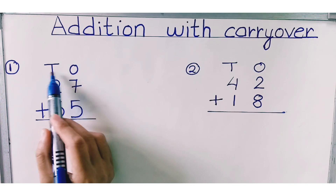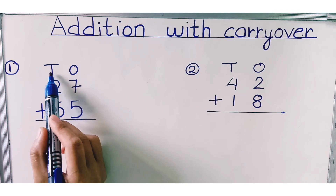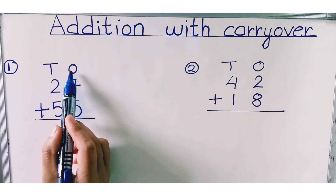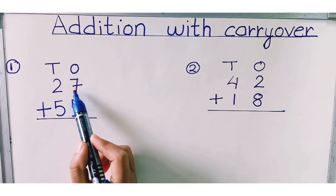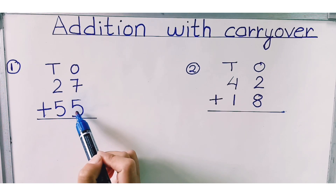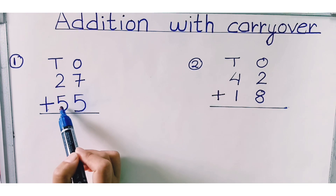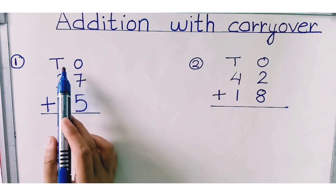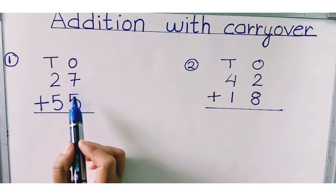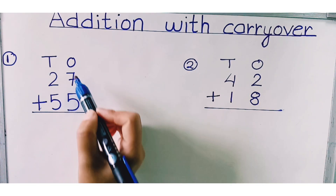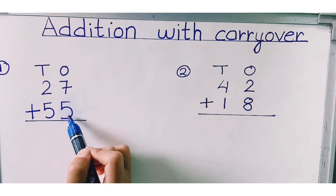First of all, you have to write the unit. 'O' is for ones and 'T' is for tens. Here, seven and five are in the ones place, and two and five are in the tens place. Remember, children, first you have to add the digits of the ones place. So which are the numbers in ones place? Seven and five.